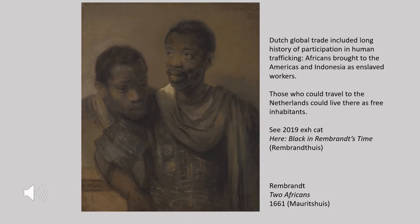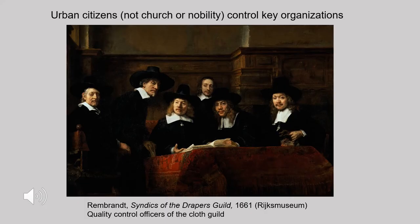The Dutch also had encounters with indigenous populations in North America and elsewhere. The particular relationship with Africa has been explored in a recent exhibition at the Rembrandt House called 'Black in Rembrandt's Time,' and I highly recommend the catalogue. An important aspect of civil and commercial culture in the Dutch Republic was that it was citizens — not the church and not the hereditary nobility — who controlled most aspects of society, including charitable organizations, civic government, and commerce. As a result, urban citizens became the primary consumers of art.